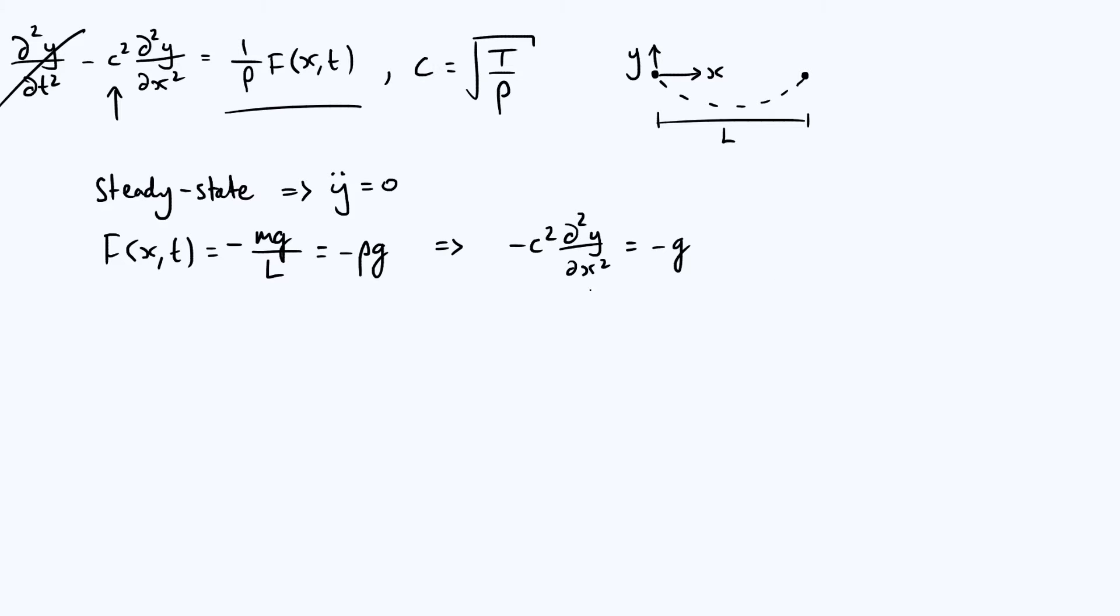Firstly, to make it a little bit more concise, let me use a double prime for our second derivative. If you divide both sides by minus c squared, you're going to get g over c squared, but then let's go to our definition of c, and so that simplifies to just g rho divided by the tension.